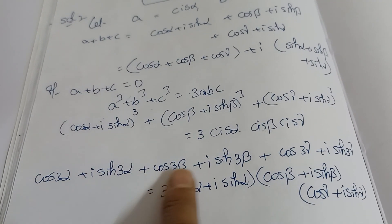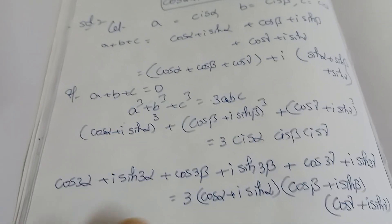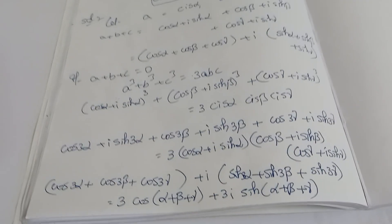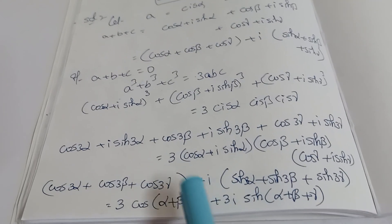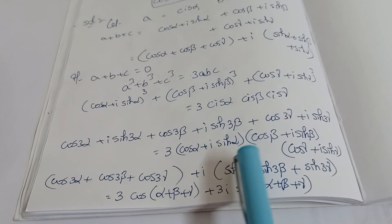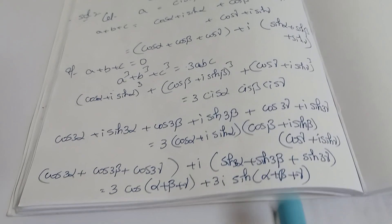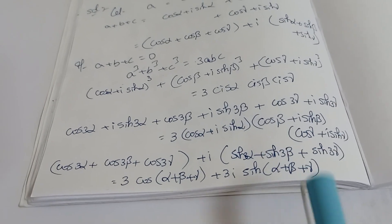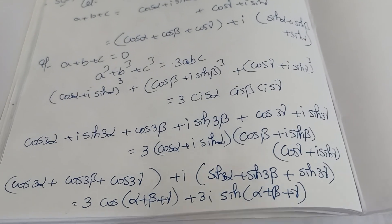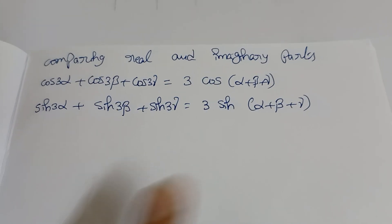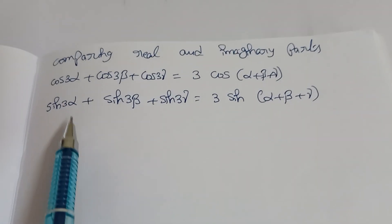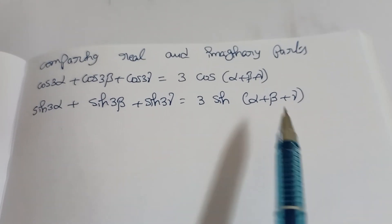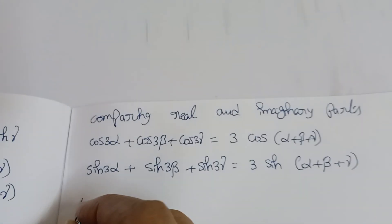On the right side, 3 · cis α · cis β · cis γ. Separating real and imaginary parts on the left, and expanding the right side: 3[cos(α+β+γ) + i sin(α+β+γ)]. Now comparing real parts and imaginary parts on both sides: real parts give cos 3α + cos 3β + cos 3γ = 3 cos(α+β+γ), and imaginary parts give sin 3α + sin 3β + sin 3γ = 3 sin(α+β+γ). Parts 1 and 2 are proved.